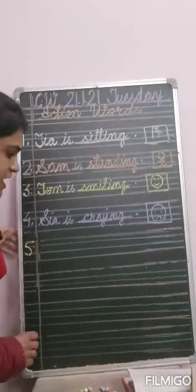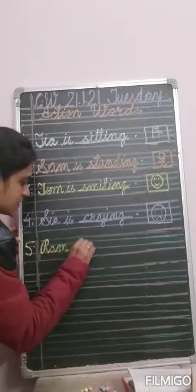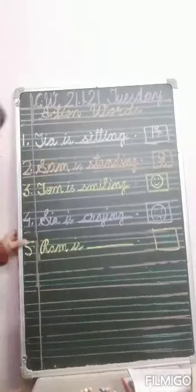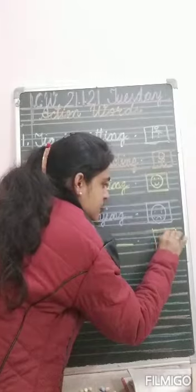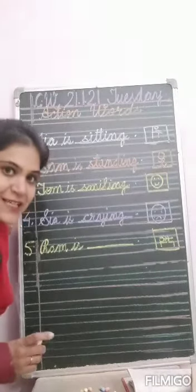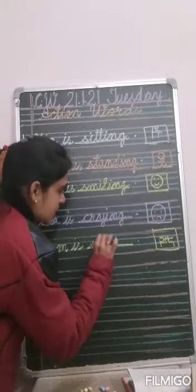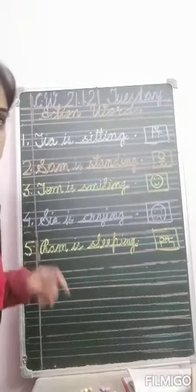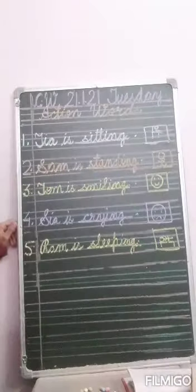Now number five. Ram is dash. There is a bed, and Ram is sleeping on it. So Ram is sleeping. Write down sleeping. S-L-E-E-P-I-N-G. Ram is sleeping.